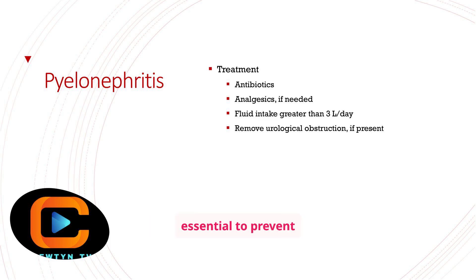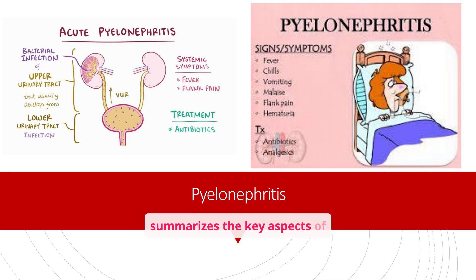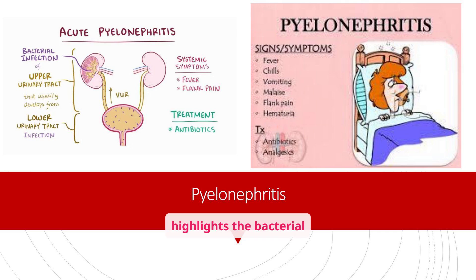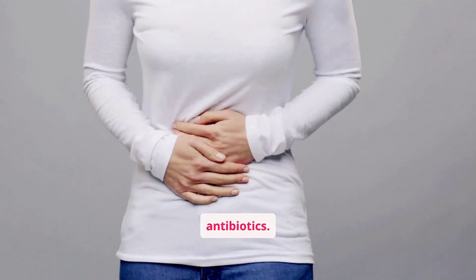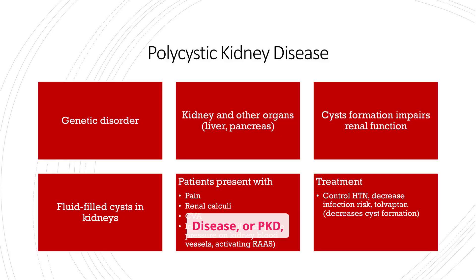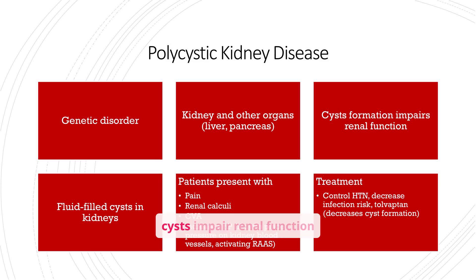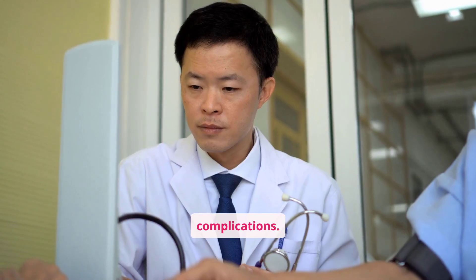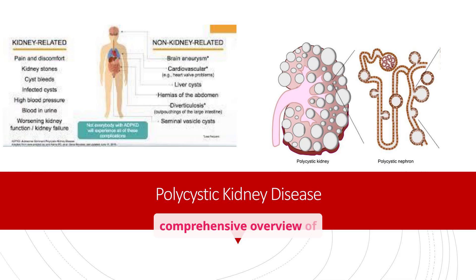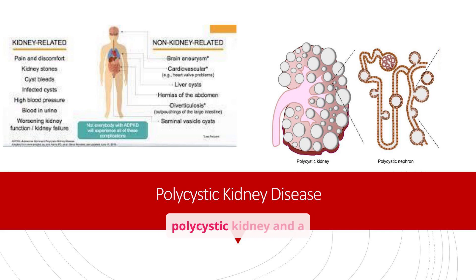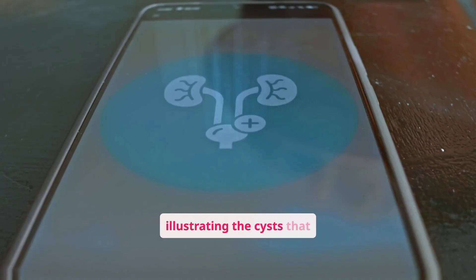Prompt treatment is essential to prevent complications. This image summarizes the key aspects of pyelonephritis, including its causes, symptoms, and treatment. It highlights the bacterial infection of the upper urinary tract, systemic symptoms such as fever and flank pain, and the importance of antibiotics. Polycystic kidney disease, or PKD, is a genetic disorder characterized by the formation of fluid-filled cysts in the kidneys and other organs. These cysts impair renal function and can lead to pain, renal calculi, increased blood pressure, and other complications. This illustration shows a diagram of a polycystic kidney and a polycystic nephron, illustrating the cysts that characterize the disease.